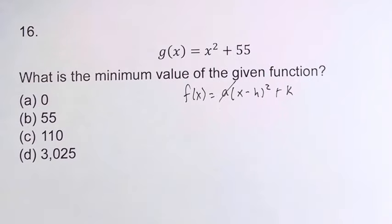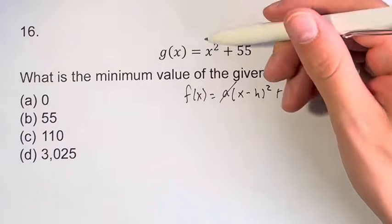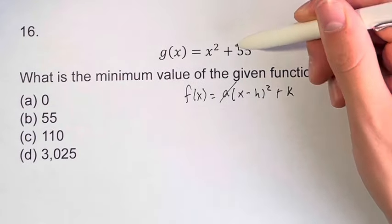Next, what is h? Well, h we usually find from the x term, right? However, we just have an x squared term and a constant. We don't have an x term.